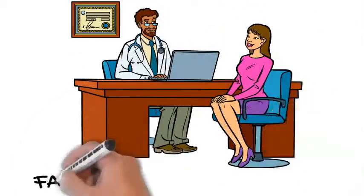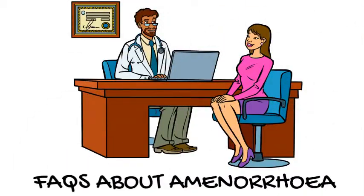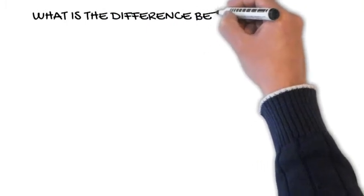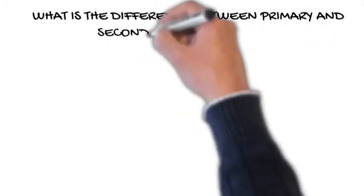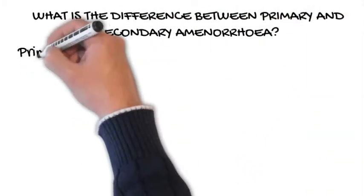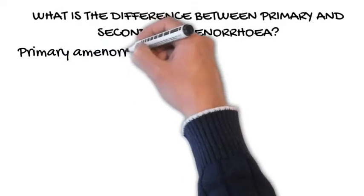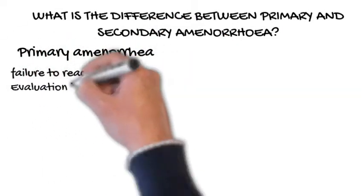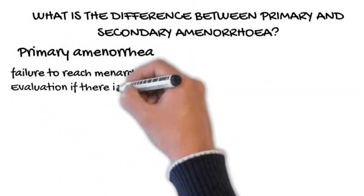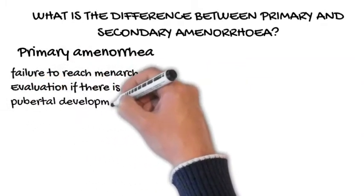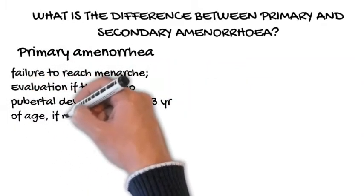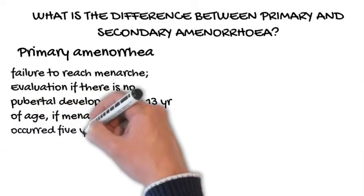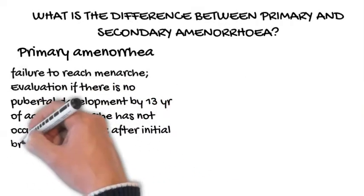Frequently Asked Questions About Amenorrhea. What is the difference between primary and secondary amenorrhea? Primary amenorrhea is defined as the failure to reach menarche. Evaluation should be undertaken if there is no pubertal development by 13 years of age, if menarche has not occurred 5 years after initial breast development, or if the patient is 15 years or older.